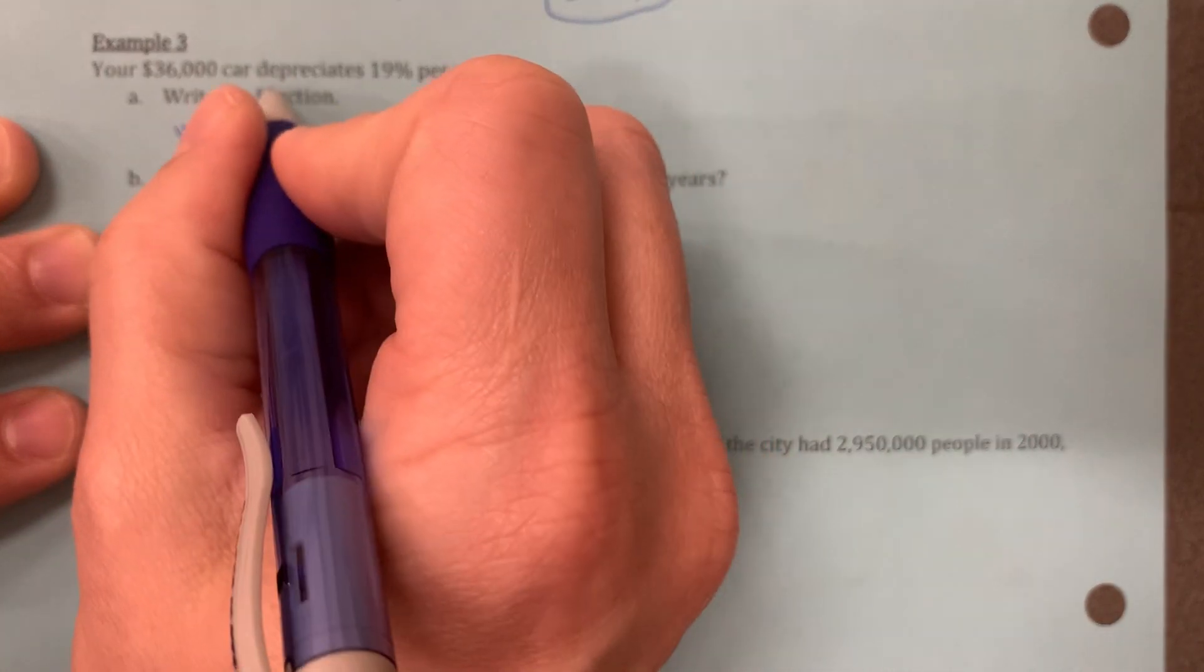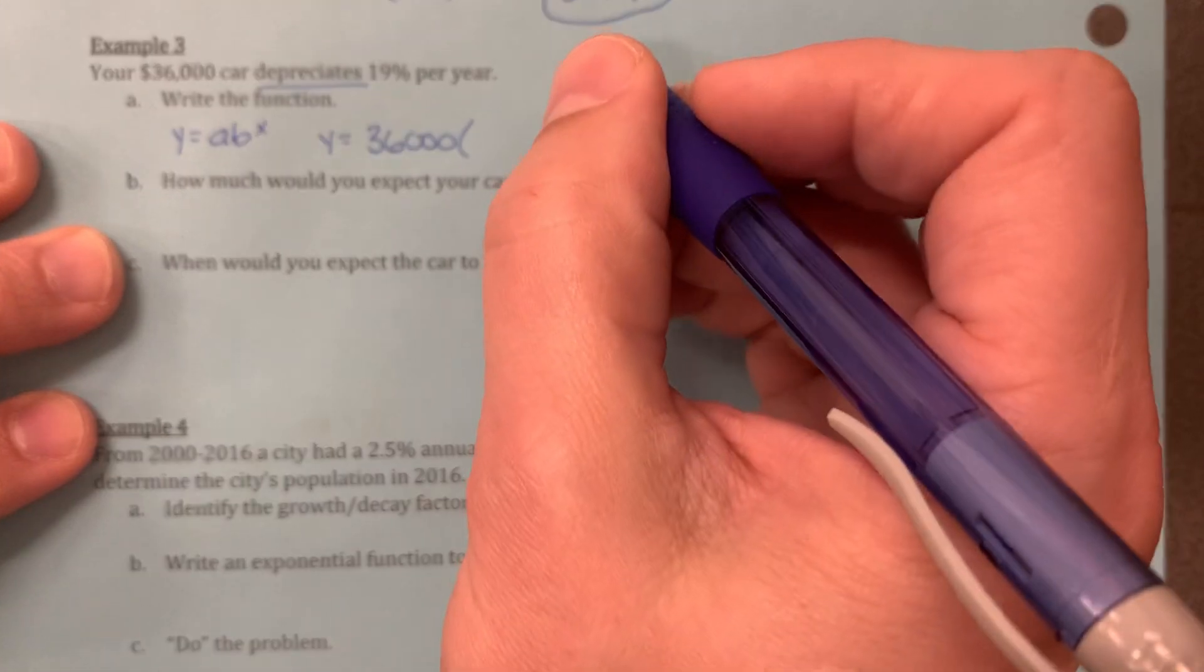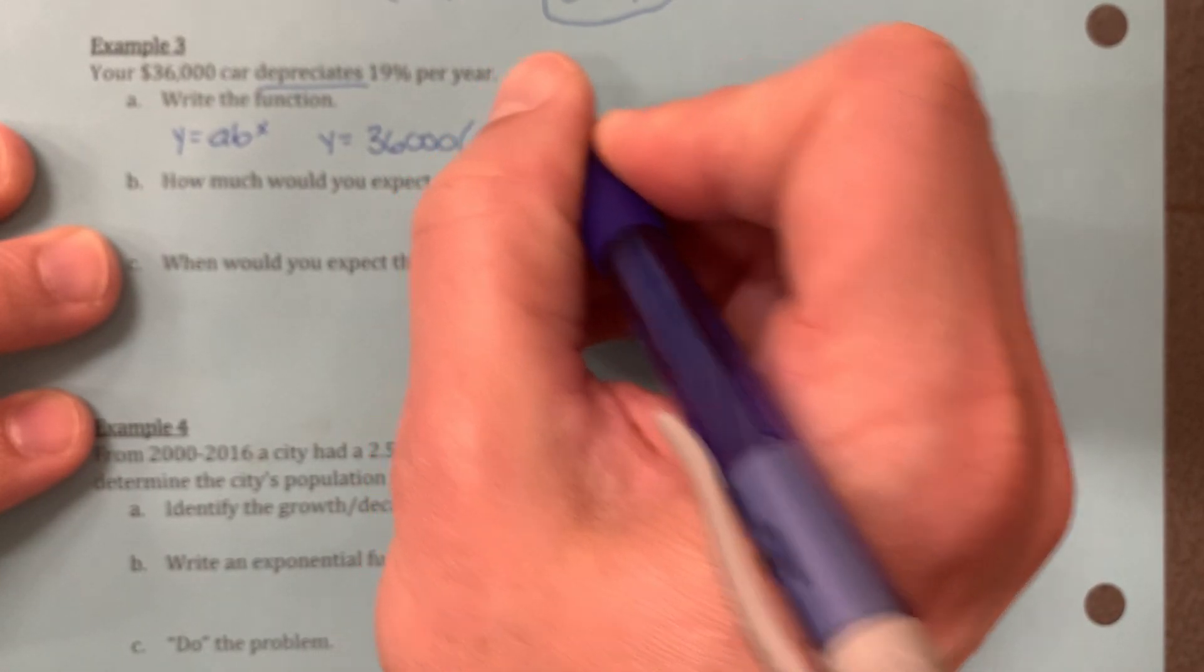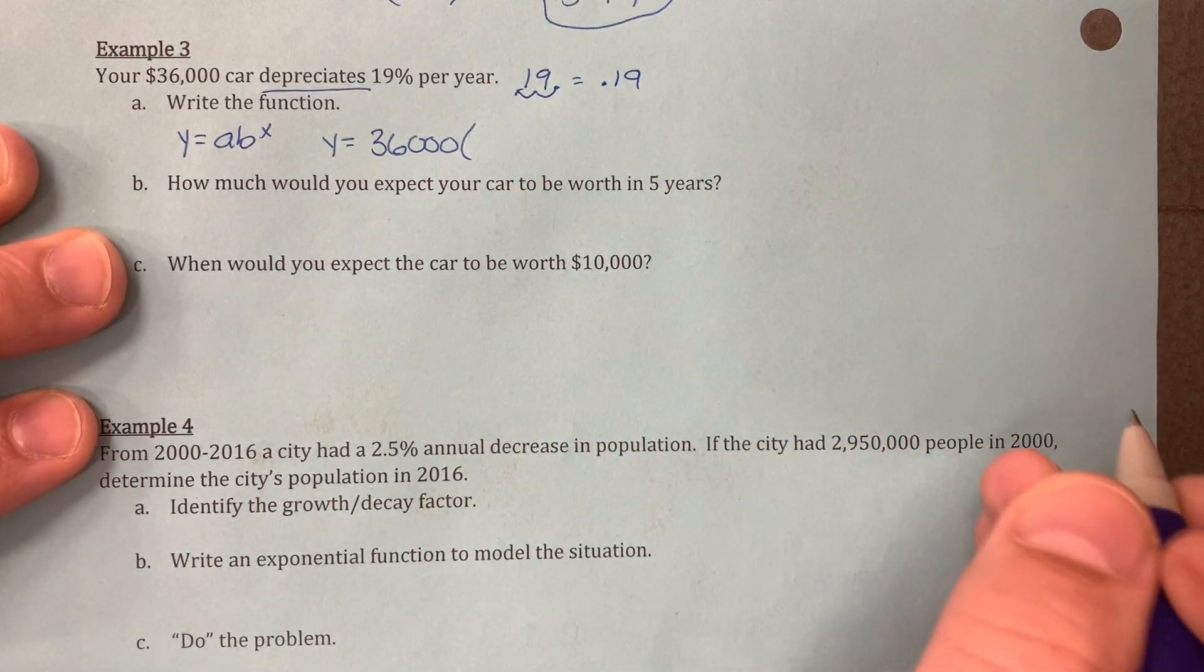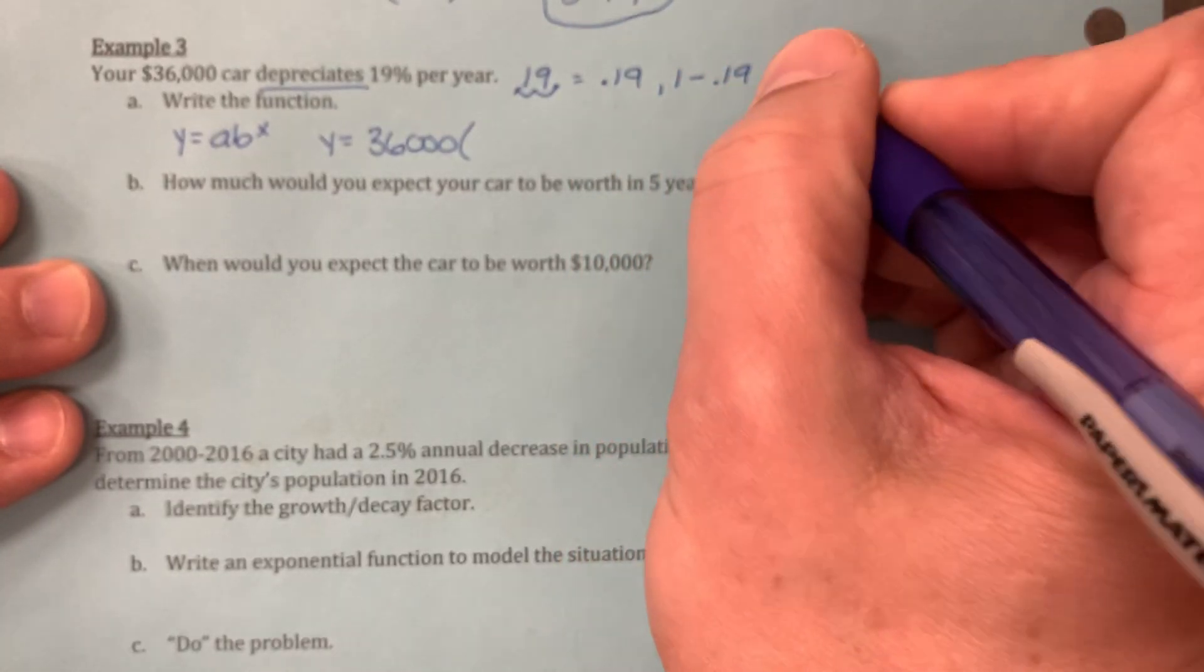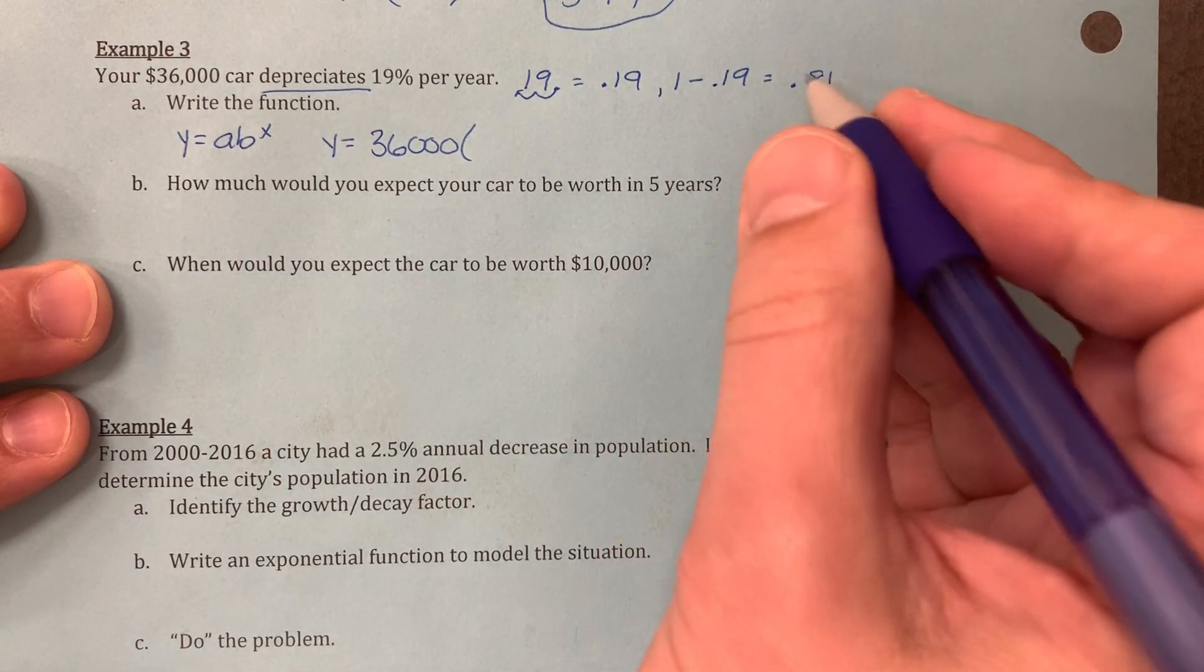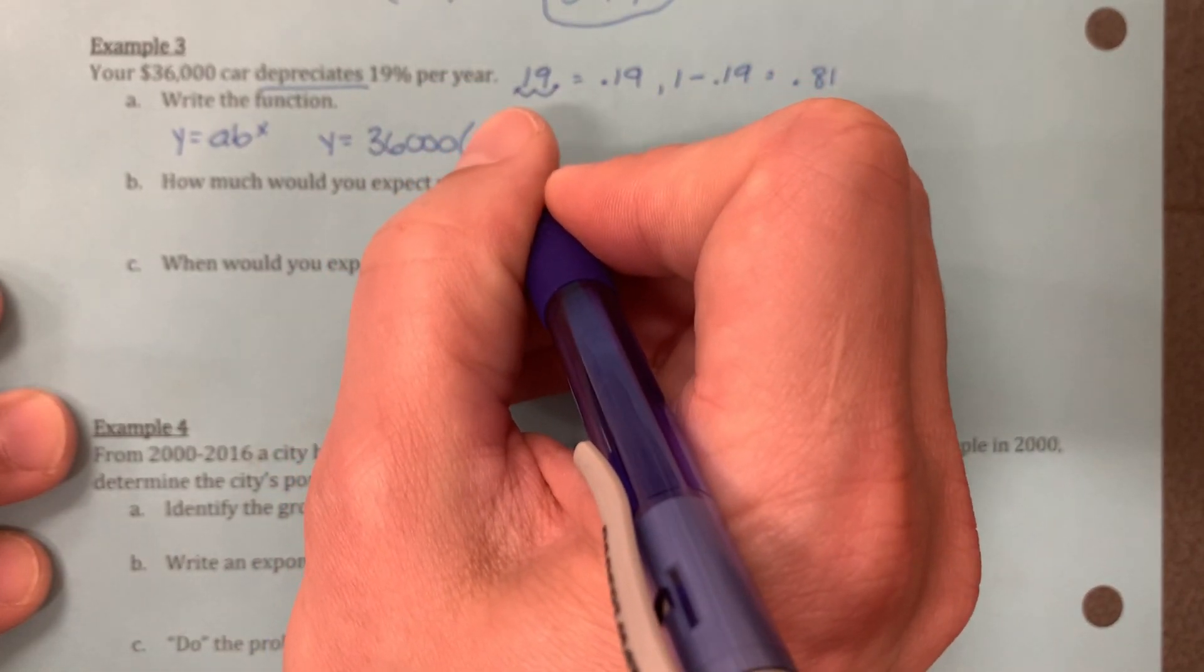Okay, this one is a depreciation, right? That means it's a decay. So we want to go ahead and say 19% would convert to 0.19. And if I'm doing a decay, that means I want to do 1 minus 0.19, and that would give me 0.81. So that number right there would represent the decay of 19%.